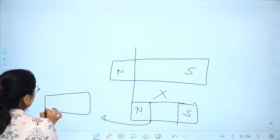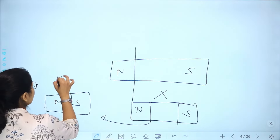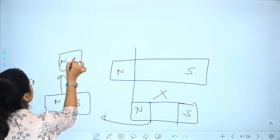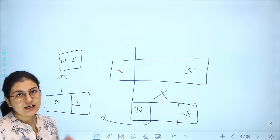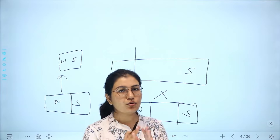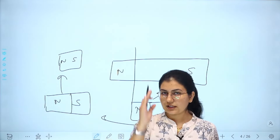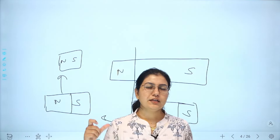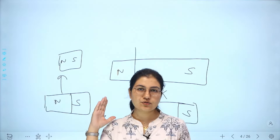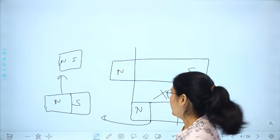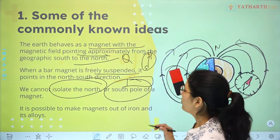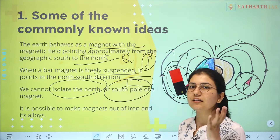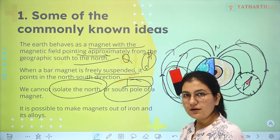When you cut the bar magnet, the remaining piece will automatically behave as a new magnet — one end becomes north and the other end becomes south. A bar magnet can never be separated into isolated poles. This is true for every magnet, regardless of its shape.